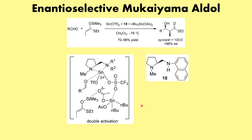That concludes the Mukaiyama aldol reaction. To summarize: the Mukaiyama aldol proceeds via an open chair transition state, and regardless of whether we start from an E or Z enolate, we always end up getting the syn aldol as the major product. Thanks a lot for watching — like, share, and subscribe.